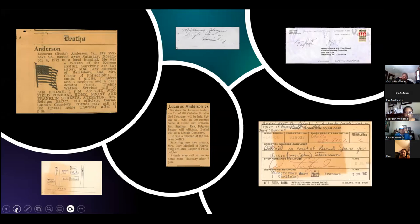Some memorial pages have death certificates on them. The death certificates can often be found on Ancestry.com, and if you wish to find them and upload them for the people you index, that would be great. But that is strictly voluntary and unnecessary for our purposes — creating a basic memorial page is what we are being asked to do. Does anyone have questions about how and what to index?